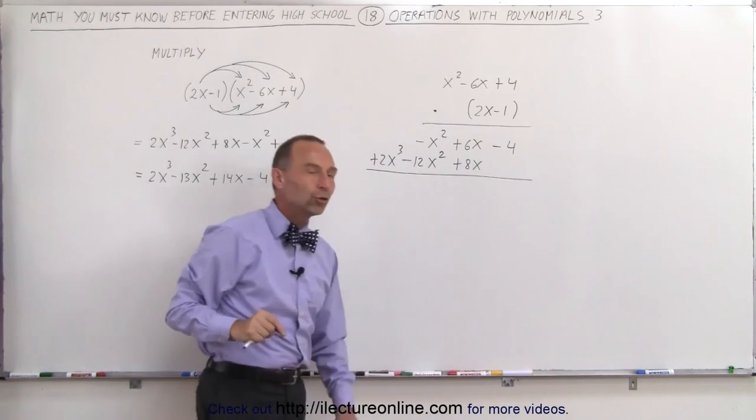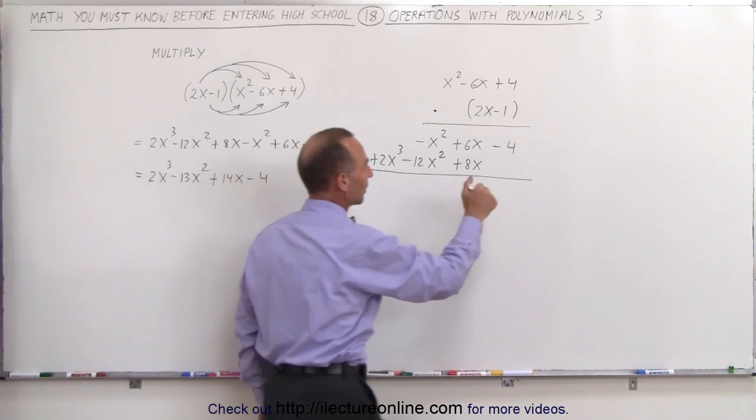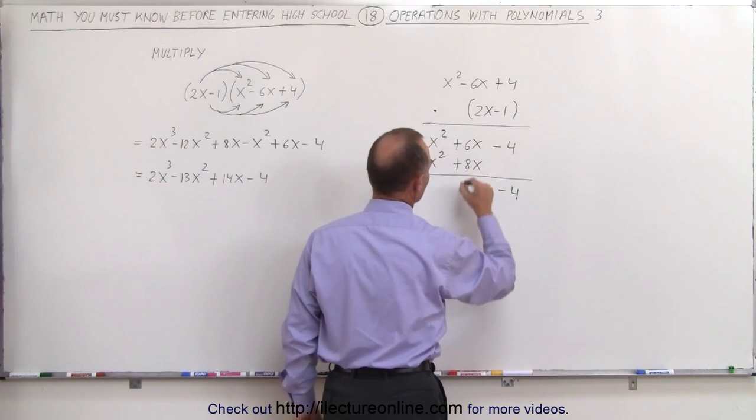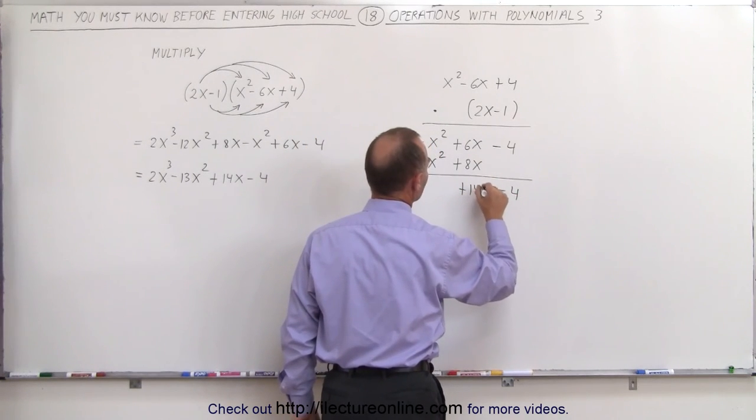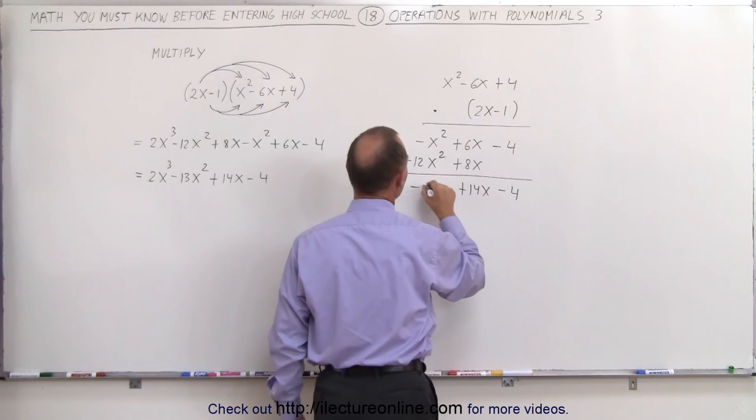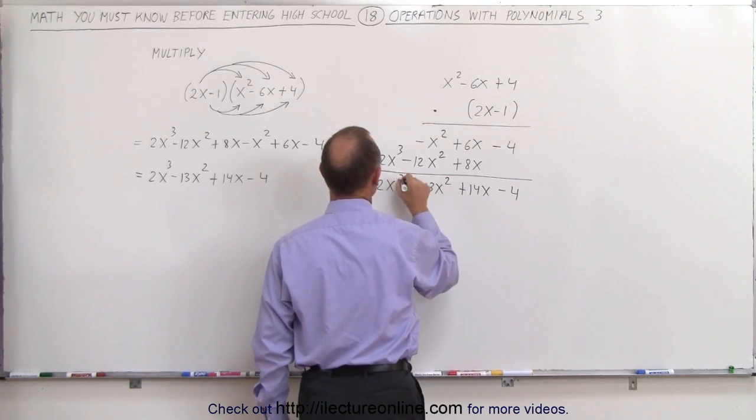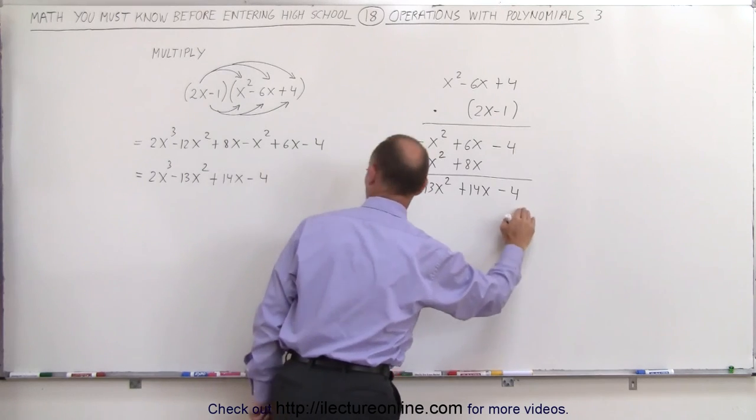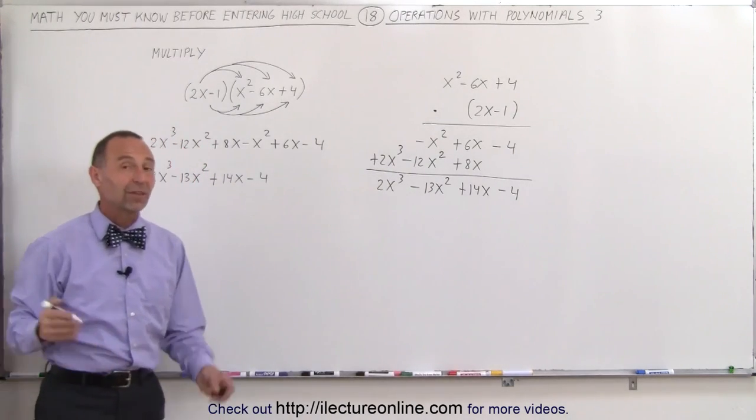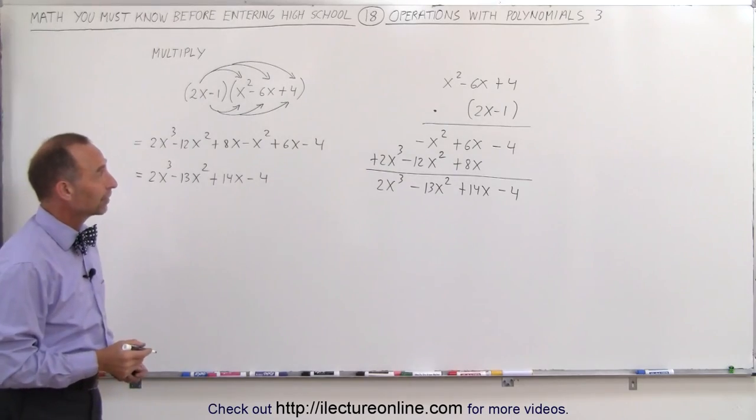Now we go ahead and add those two rows together. Here we get negative 4. Here we get plus 14x. Here we get minus 13x squared. And here we have 2x cubed. And of course, that should be exactly the same as what we have over there. So that's how we multiply polynomials together.